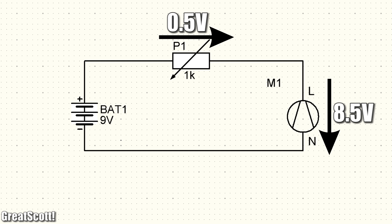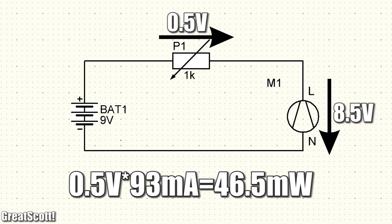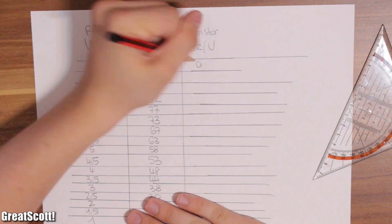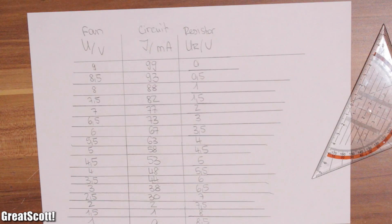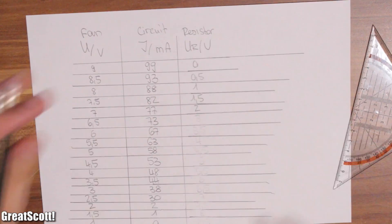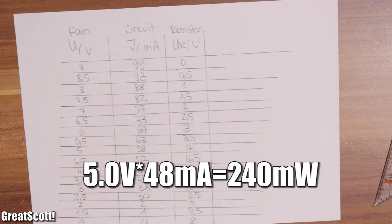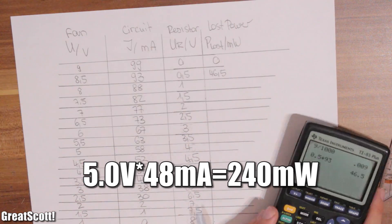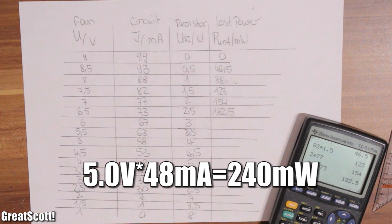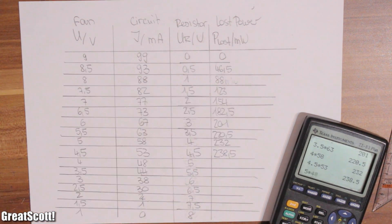That means the resistor wastes power of 0.5 volts multiplied by 93 milliamps, so around 46.5 milliwatts. A second example would be 4 volts across the fan, so 5 volts across the resistor. Power lost of 5 volts multiplied by 48 milliamps equals 240 milliwatts. I did the calculation for the rest here.